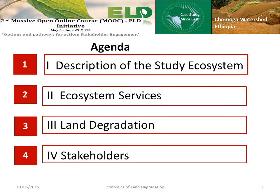The presentation consists of four major areas of the case study relevant to the course. These are: the profile of the ecosystem, such as the size, topography, and types of land use; types of ecosystem services the watershed provides; the extent and causes of land degradation; and finally, I will introduce the stakeholders involved in the project.